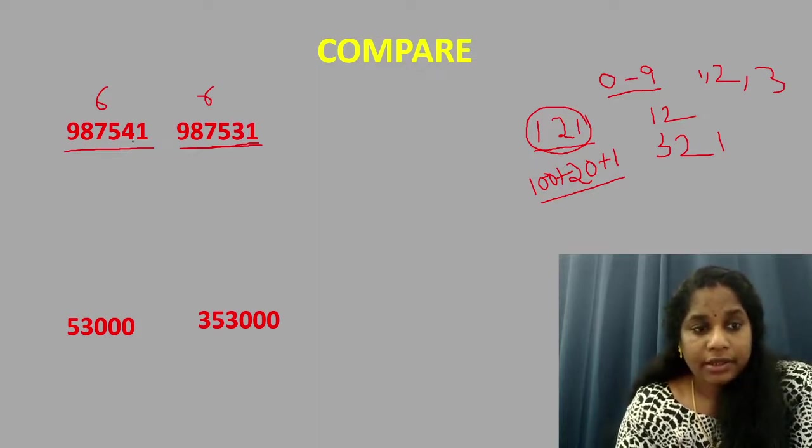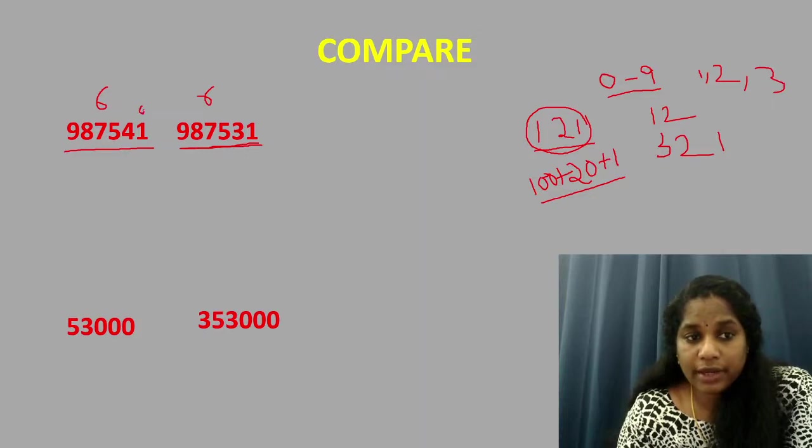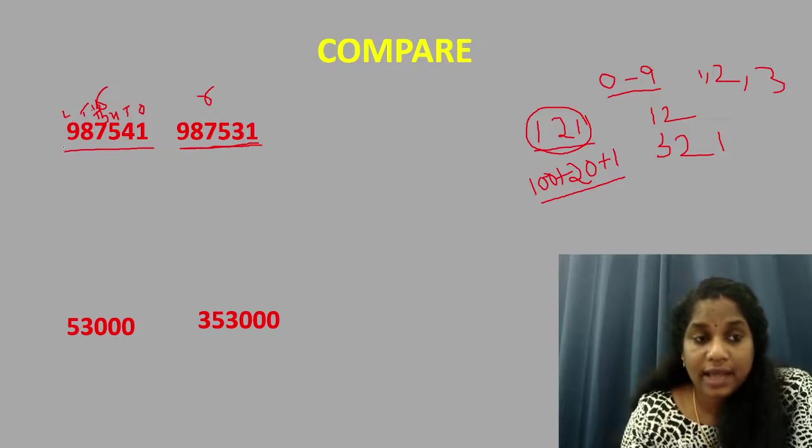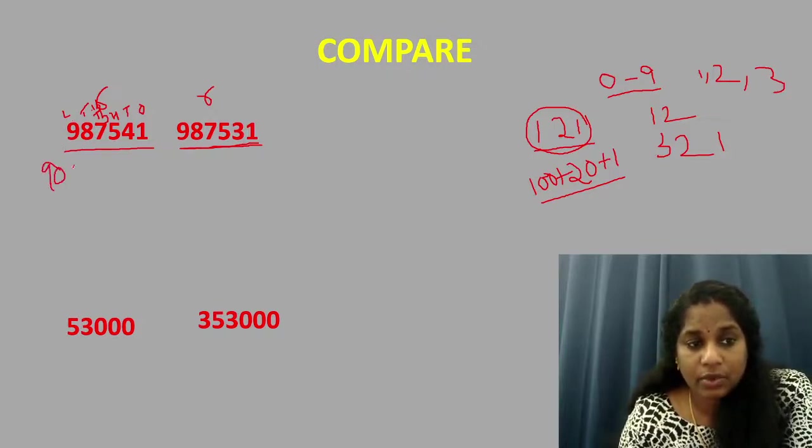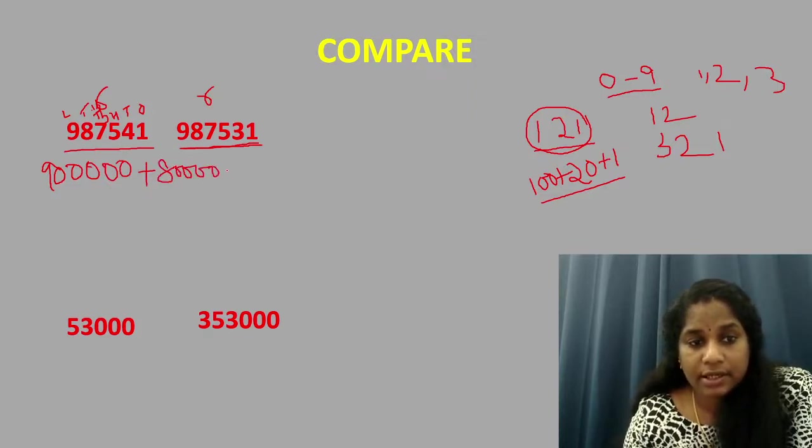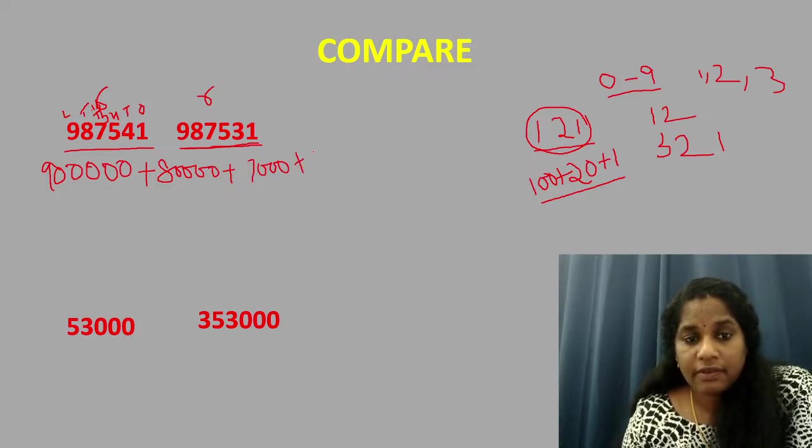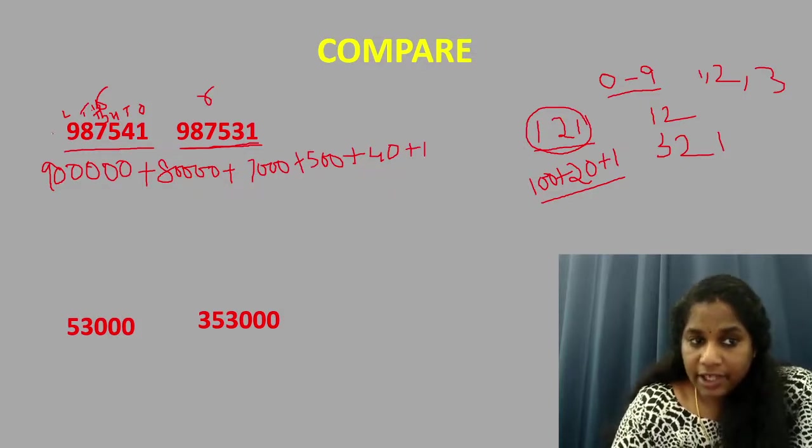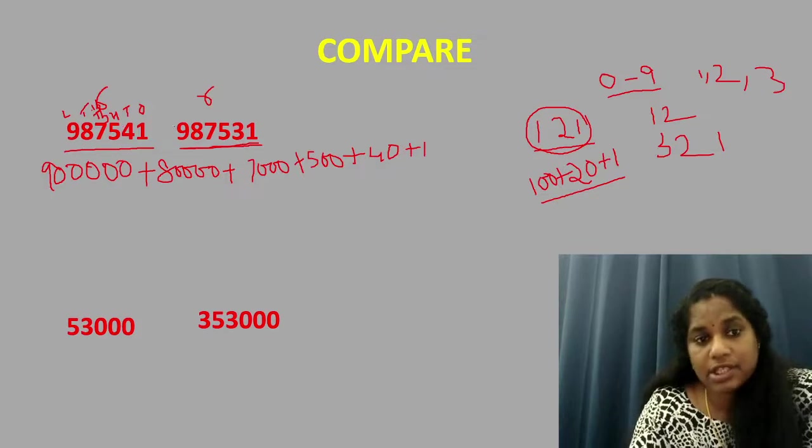Because from the extreme left only, the number which is at different place value will help you to identify a greater number or a lesser number. Let us see that. Here 9 is at which position? If you want, you can write it down here. Ones, tens, hundred, thousand, ten thousand and lakhs. So 9 is at lakhs place. So one lakh has how many zeros? Five zeros. Plus 8 is at ten thousand. So this is eighty thousand. 7 is at thousands place. 5 is at hundreds place. And 4 is at tens place. So 4 into 10 plus 1.